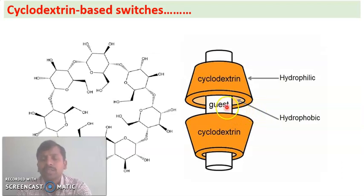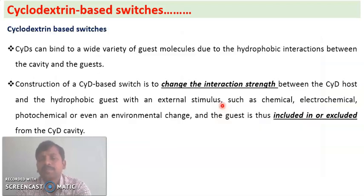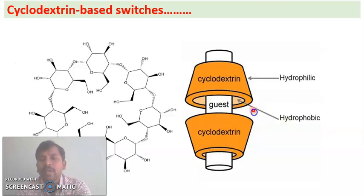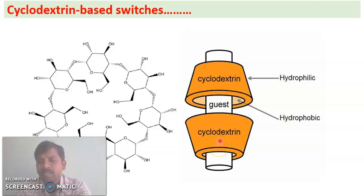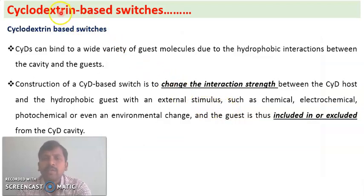By applying these external stimuli, the strength between the cyclodextrin and the hydrophobic guest can be changed and controlled, thereby constructing a cyclodextrin-based switch. By constructing a cyclodextrin-based switch we can include or exclude the guest from the cyclodextrin cavity. The guest molecule can be included in the cavity or excluded by changing the external stimulus.